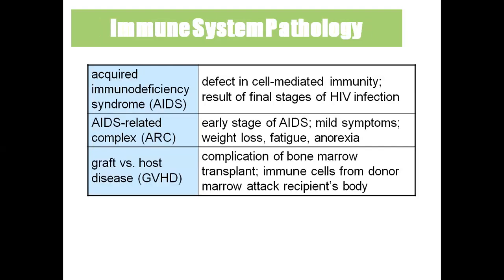AIDS — acquired immunodeficiency syndrome — is caused by HIV, which affects cell-mediated immunity, specifically the T-lymphocytes. The HIV virus attacks T-lymphocytes, decreasing immunity and causing immunocompromise. AIDS-related complex (ARC) is the early stage of AIDS, with symptoms of weight loss, fatigue, and anorexia — meaning loss of appetite.